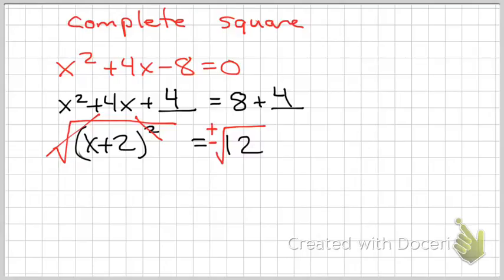Okay? So now, I have X plus 2 equals positive and negative. Well, square root of 12 is 4 times 3, right? So the square root of 4 would be 2 and the square root of 3 would still be the square root of 3.